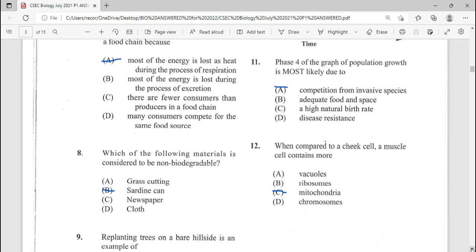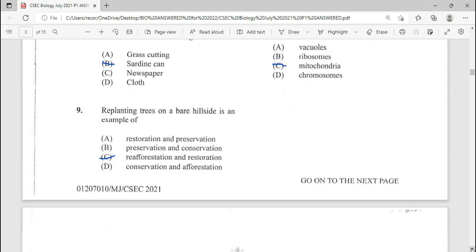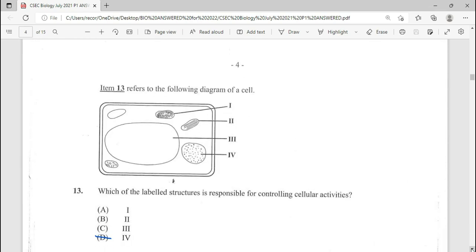Number 12, when compared to a cheek cell, repeated question, muscle cells contain more mitochondria. Moving on to number 13.